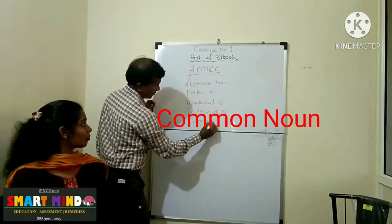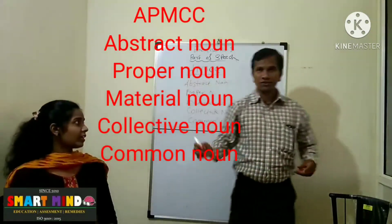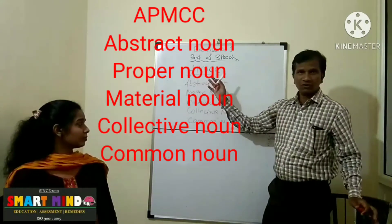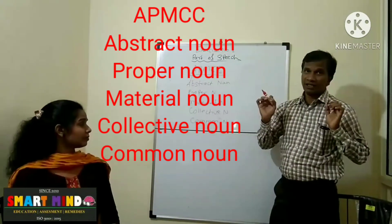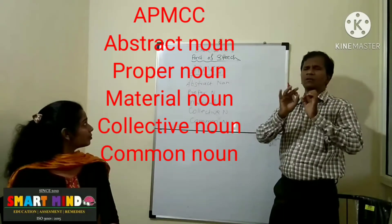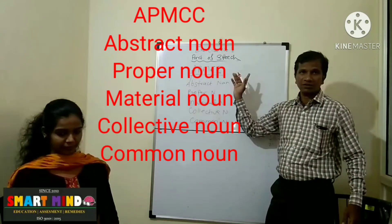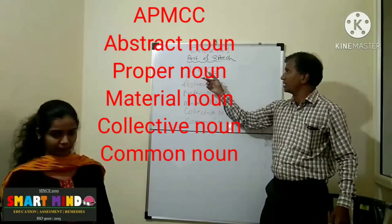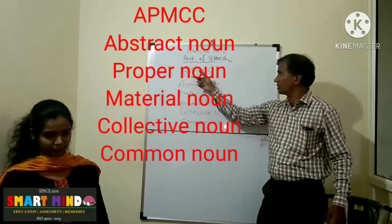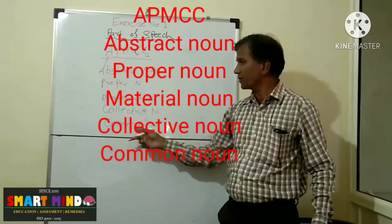C — common noun. Students, these are the types of nouns. How do we use the NLP technique here? How to remember the five types of nouns? Very simple — remember the world-famous market in Mumbai: A-P-M-C market. A: abstract noun. P: proper noun. M: material noun. C: collective noun. And again C: common noun.